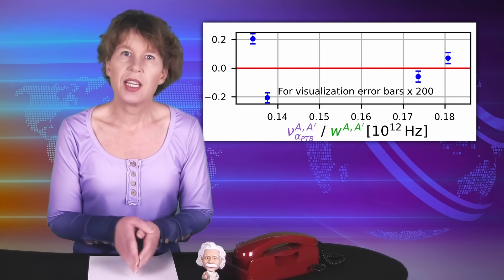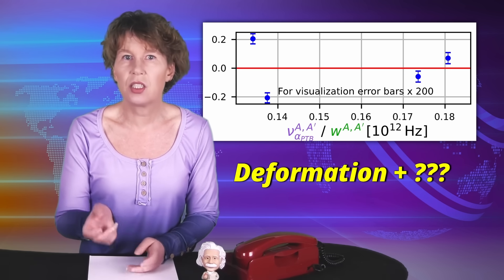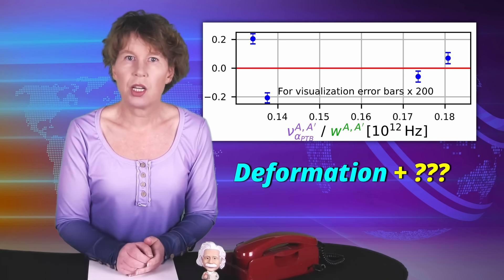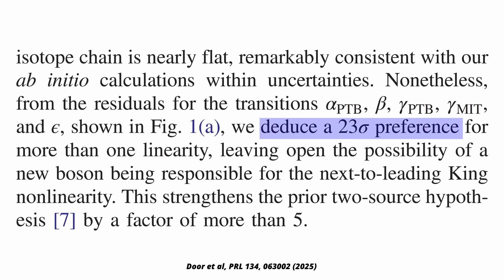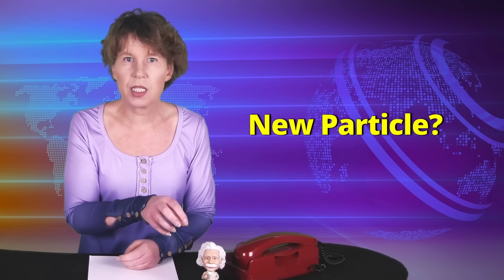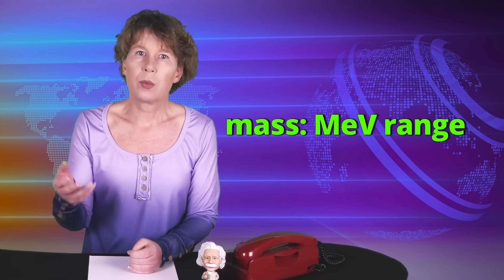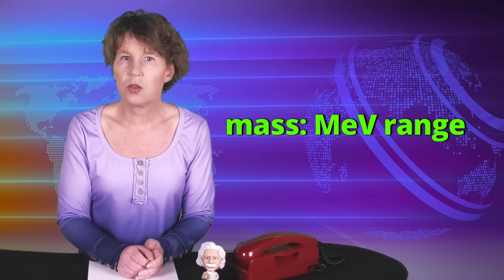There could be multiple reasons for this, but either way you look at it, they say there needs to be some extra contribution in addition to the nuclear physics that they did already use, which is a nuclear deformation. They write in the paper that they deduce a 23 sigma preference for more than just the nuclear deformation going on, and that this leaves open the possibility of a new boson being responsible. So they don't say that this must be a new particle, but that a new particle would explain the mismatch. They calculate that the new particle would have to be one of medium mass, with a mass somewhere in the range of a few mega electron volt.